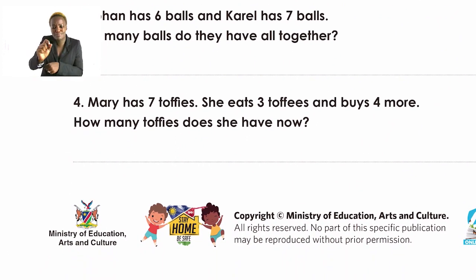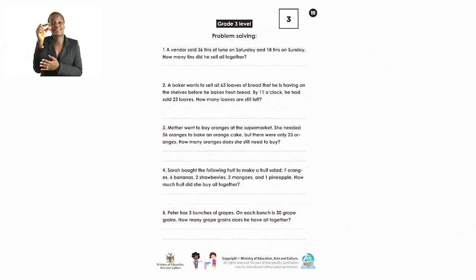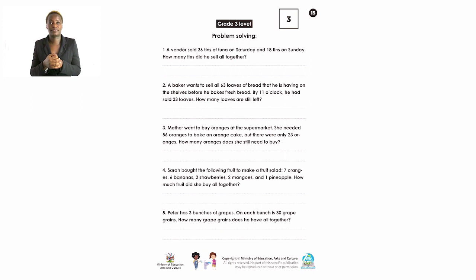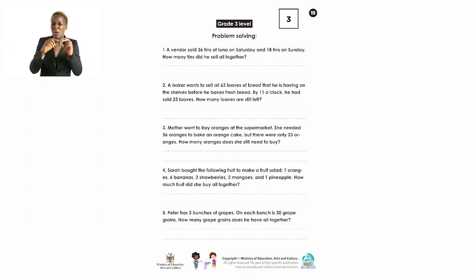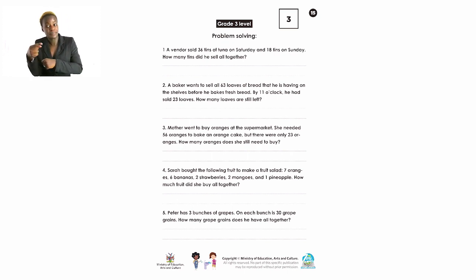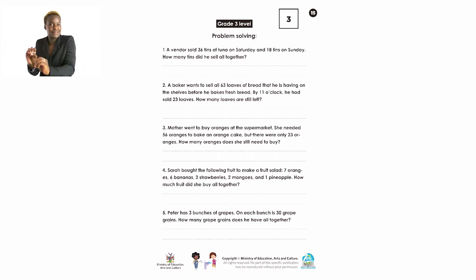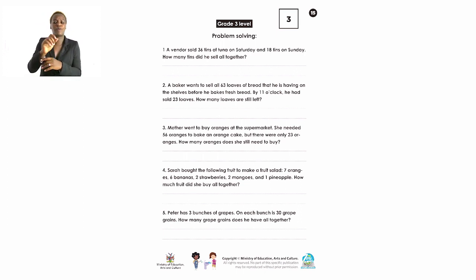Turn to page 15, Grade 3 level. This is called problem solving, and it is similar to word sums. The guidelines are: first, read the sum carefully; second, determine which calculation to use — plus, minus, division, or multiplication. Since we haven't covered division and multiplication yet, we will focus only on addition and subtraction. After that, we need to write the number sentence.